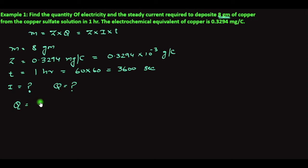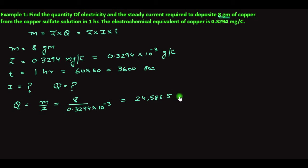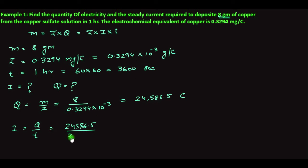Q = M / Z = 8 / (0.3294 × 10⁻³) = 24,586.5 coulombs. That is the quantity of electricity. The steady-state current is I = Q / T = 24,586.5 / 3600 = 6.75 amperes. So these are the required values.